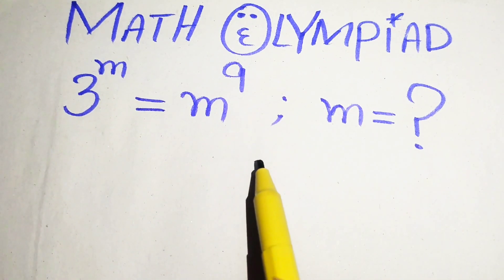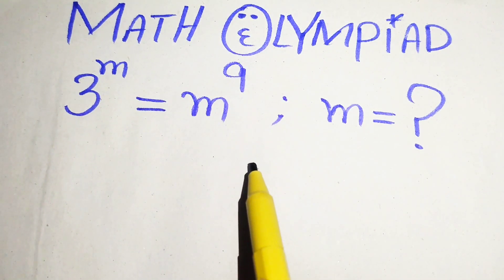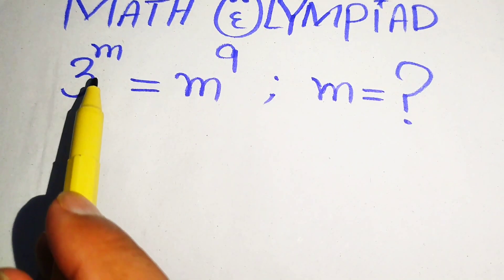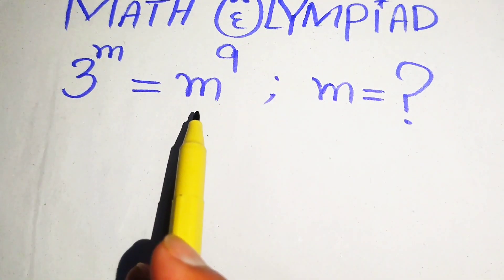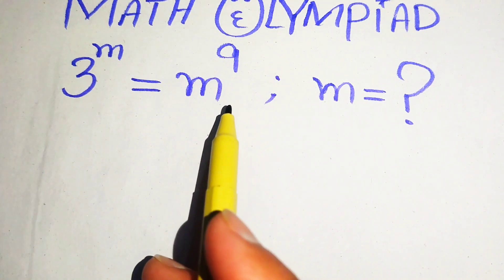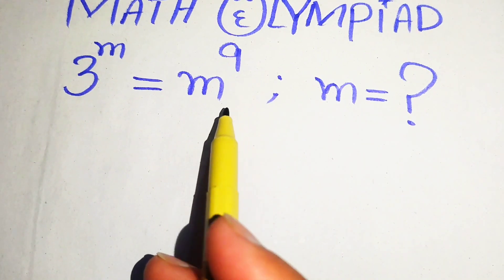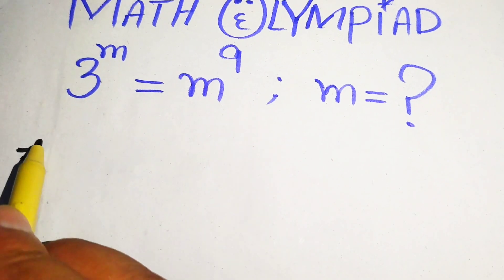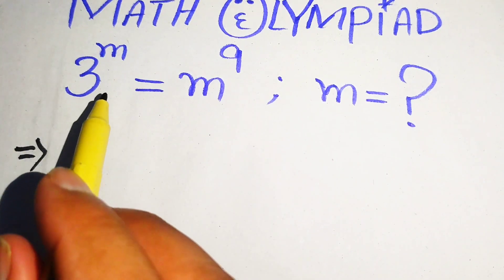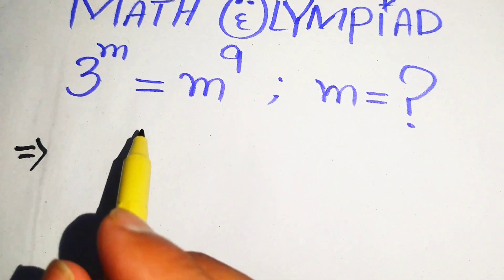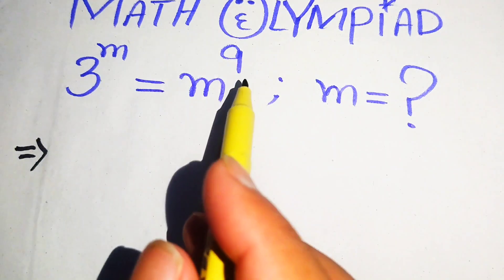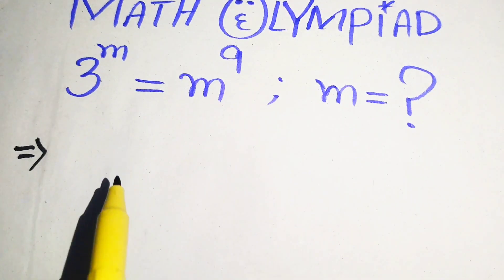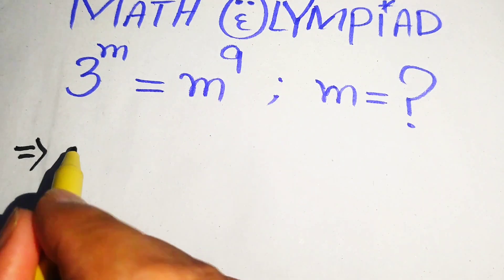The very first thing we are going to do is move the unknown term to the right hand side and the constant term to the left hand side. To move the unknown term to the right hand side, we need to take the mth root on both sides of this equation.